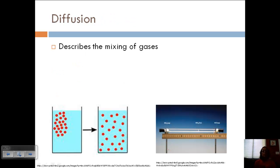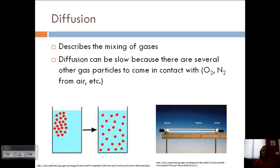Okay, let's talk about the other part, which is diffusion. So this describes the mixing of gases. It can be slow because there are several other gas particles that it can come in contact with, such as oxygen, nitrogen from the air, etc. And it's hard to describe theoretically. So to fit kinetic molecular theory to this is sometimes difficult.